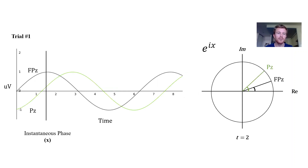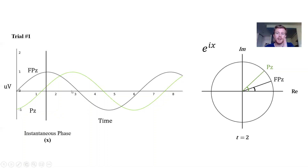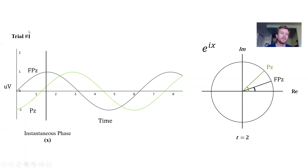We want to describe the relationship between signals recorded at two sensors. Here I've shown two signals recorded from electrodes — the black signal from FPZ and the green one from PZ, showing voltage over time. At one instantaneous time point, we take the instantaneous phase — the point in the cycle each signal is at — and relate them to one another by taking the difference: the instantaneous phase of FPZ minus the instantaneous phase of PZ. This describes the relationship between our two sensors.